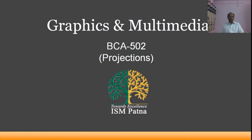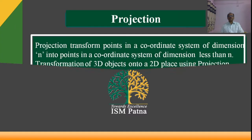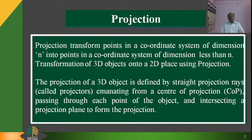Dear students, in this session we will discuss projections. By use of projection, we transform points in a coordinate system of dimension n into points in a coordinate system of dimension less than n. Transformation of three-dimensional objects into a two-dimensional plane using projection. The projection of a three-dimensional object is defined by straight projection rays called projectors, emanating from a center of projection known as COP, which passes through each point of the object and intersects a projection plane to form the projection.